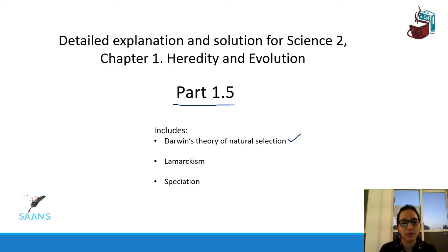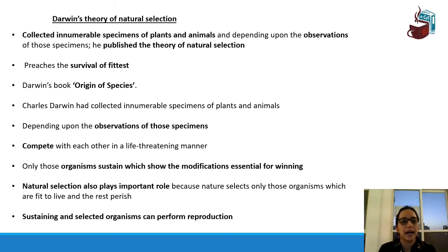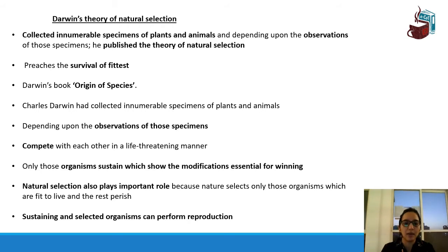We're going to see what helps organisms to sustain and how they still exist on planet Earth. Darwin has a theory on this. Also, scientist Lamarck has a theory known as Lamarckism, and then we'll see what speciation is and what is responsible for it. Let's start with Darwin's theory of natural selection. It's going to be a little theoretical, but I'll try to keep it as interesting as possible and minimize it to just the keywords.